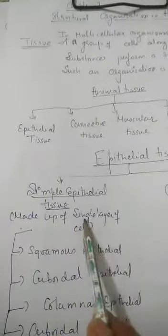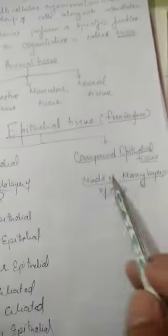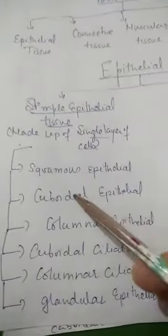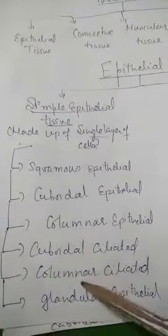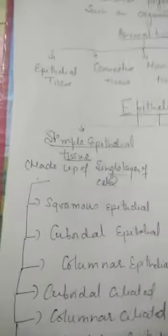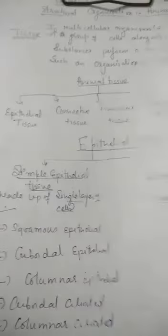Epithelial tissue is of two types: simple epithelial tissue and compound epithelial tissue. Simple means made up of a single layer of cells, and compound means made up of many layers of cells. Simple epithelial tissue is further divided into squamous, cuboidal, columnar, cuboidal ciliated, columnar ciliated, and glandular types.